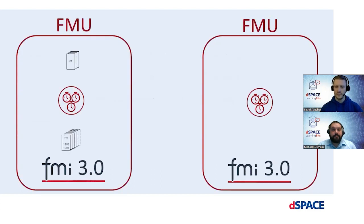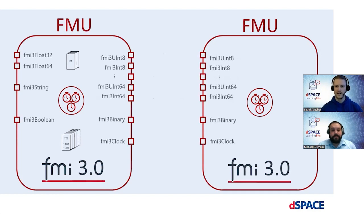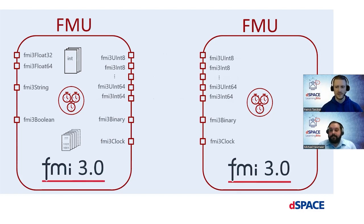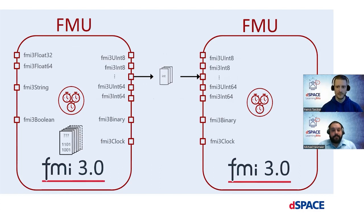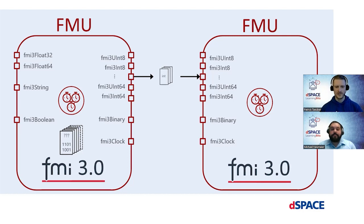With FMI 3.0, things changed. First of all, there are a lot more data types now, for example for the different integer types. Furthermore, there is array support now — it is possible to define matrices and other multidimensional arrays, meaning you can send your whole array over one port. And in FMI 3.0, there's now a new data type for opaque binary data, the FMI 3 binary type, which makes it possible to send a large amount of binary data from one model to another efficiently over one port.